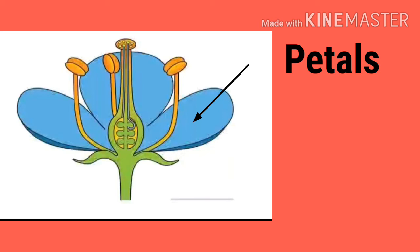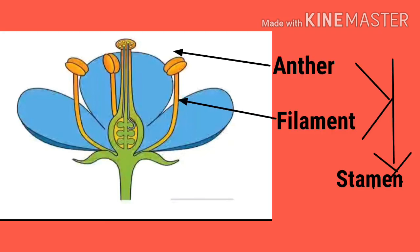Try to label all the parts after watching the video. Later I will cut and show you all the parts which are given in this picture. If you look at a hibiscus flower, you will see sepals, petals and some other parts.